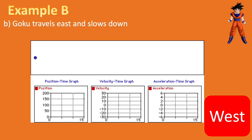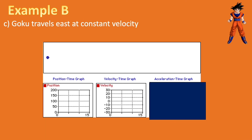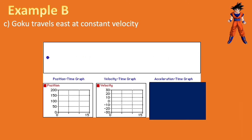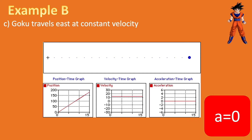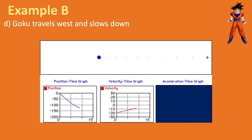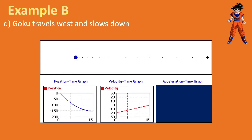If something slows down, the acceleration is opposite the direction it's going. Part C — travels east at constant velocity. Acceleration is change in velocity. Constant velocity means the velocity is not changing, so if there's no change in velocity, there's no acceleration — A equals zero. Part D — travels west and slows down. If something is slowing down, there has to be an acceleration opposite its direction, so if he's traveling west and slowing down, his acceleration is east.